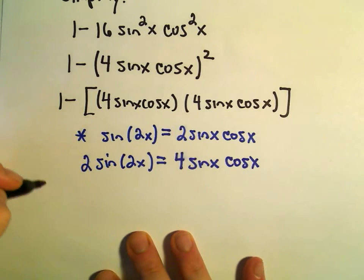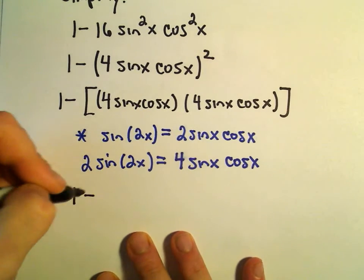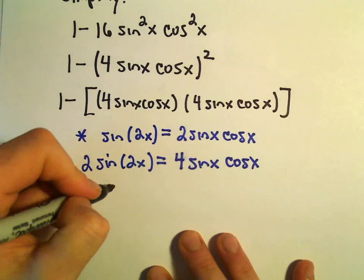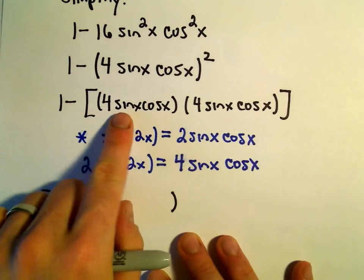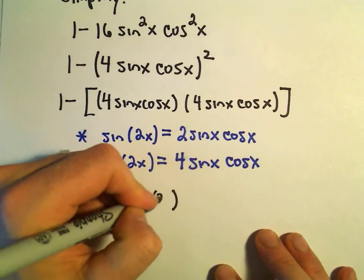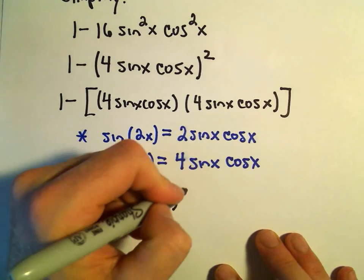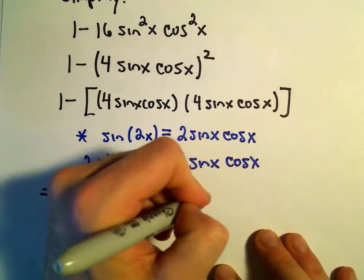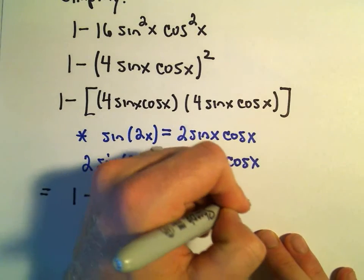So really, we're going to get 1 minus, okay, I'm going to get rid of the brackets. It says 4 sine x cosine x. That's the same thing as 2 sine of 2x. Squeeze it in there. Then we'll have another 2 sine of 2x.